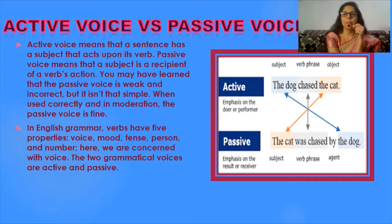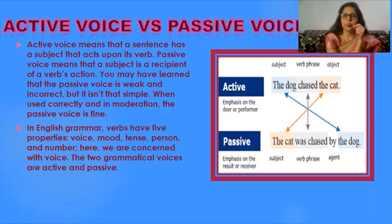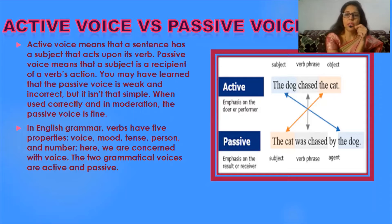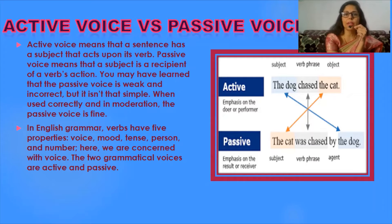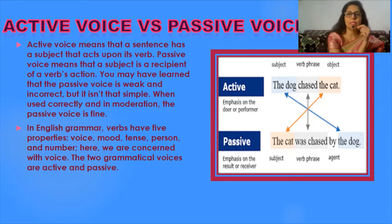Some examples will create a clear picture. In the sentence 'The dog chased the cat,' the dog as subject is active. In the passive version, the subject has moved to the back of the sentence, taking the place of the object. Now the cat, which was the object, has become the subject: 'The cat was chased by the dog.' This is the core difference between active and passive voice sentences.